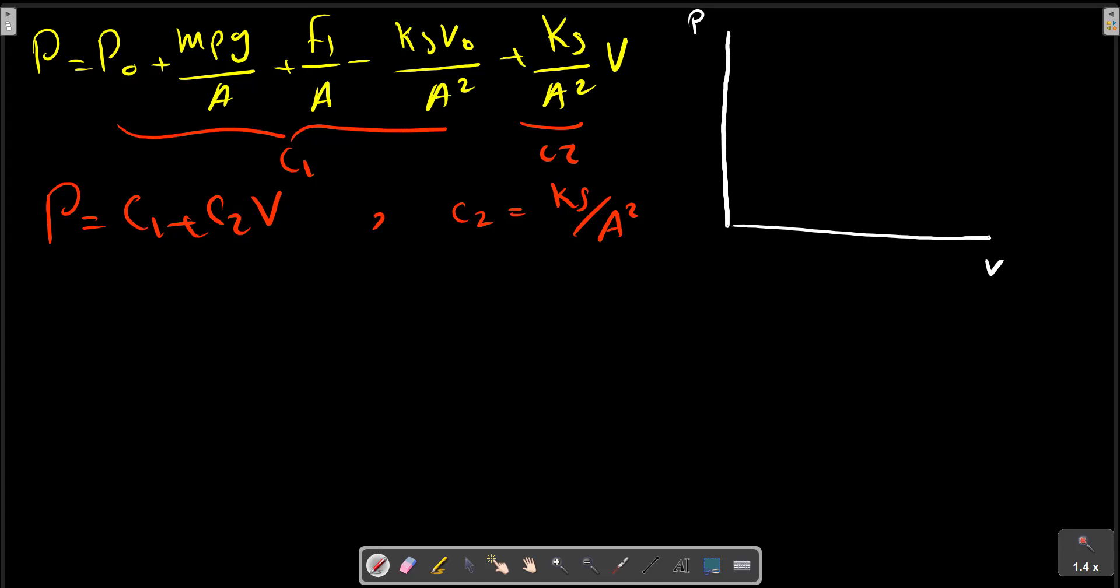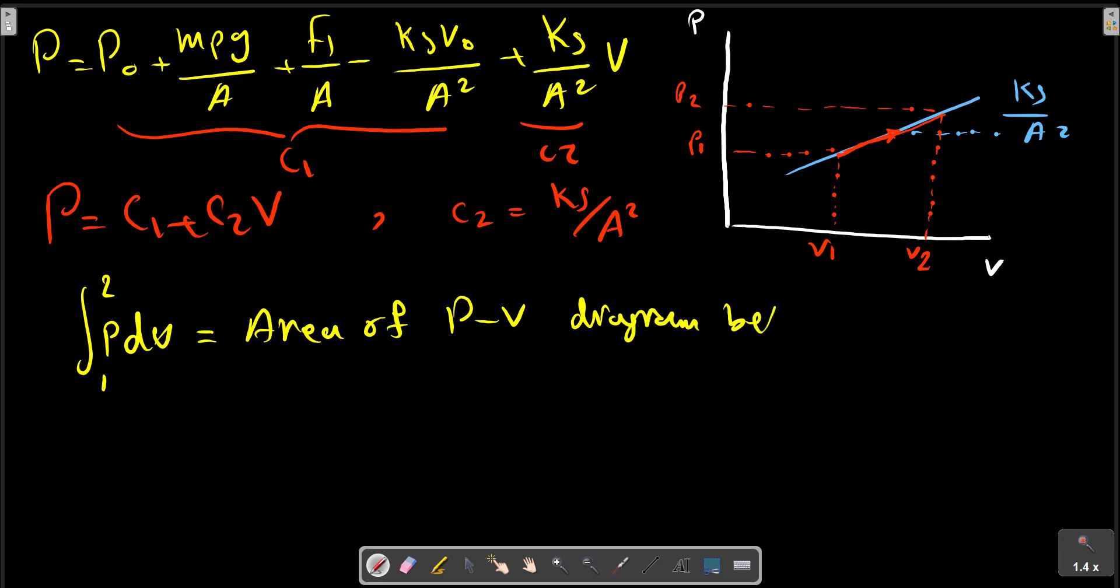We can draw the relation between P and V. In the diagram, we have a line with slope k·S over A squared. We have state 1, for example, and state 2. The process goes in this direction with P1 and P2, V1 and V2. As we know, the integration of P·dV equals the area of the P-V diagram below the P-V graph.